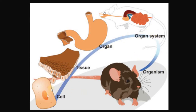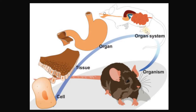For example, here we have a cell. A group of these cells makes this tissue. A group of these tissues makes this organ — the stomach. A group of different organs — the stomach, the liver, the pancreas, the intestine, the esophagus — make this system, which is the digestive system. And a group of systems — the digestive system, the respiratory system, the circulatory system, and so on — make an organism, in this case a rat.